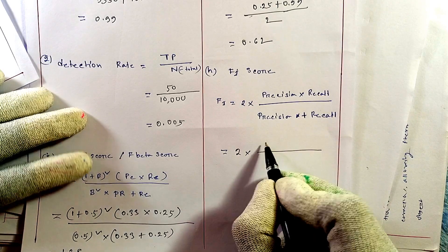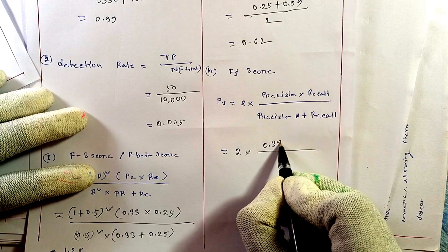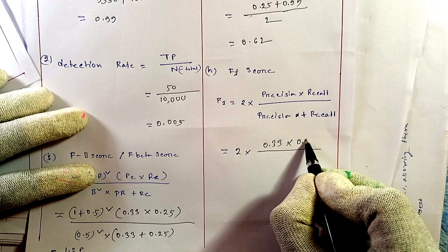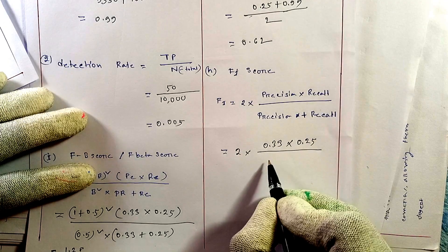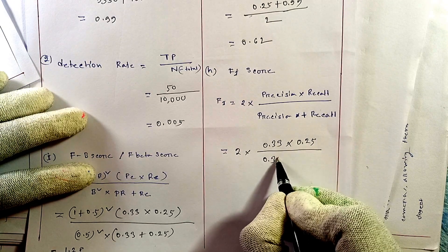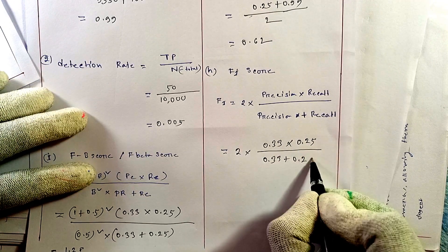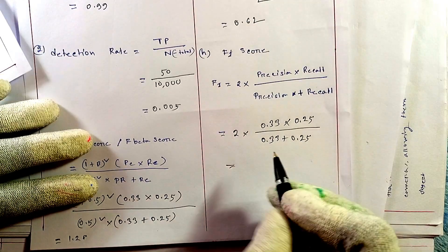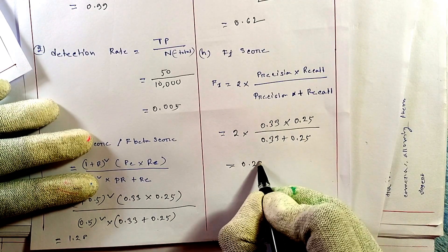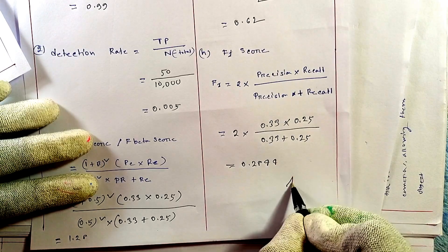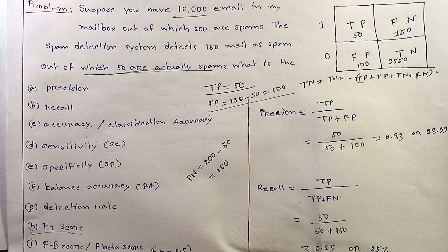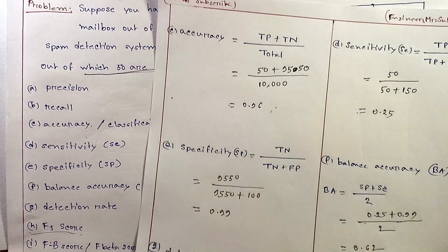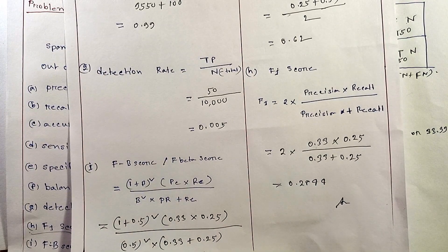For the F1 score, the formula is 2 times precision times recall divided by (precision plus recall): 2 times 0.33 times 0.25 divided by (0.33 plus 0.25), and we get the output 0.284. In the video description I have put all the necessary documents like PDF files for this solution. You can check. Thank you.